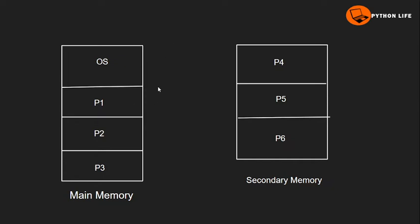For example, we need to execute processes. First, we need to load them into main memory in the operating system. So we need to execute process P1. While executing process P1, if P1 needs the CPU, then the CPU is needed.